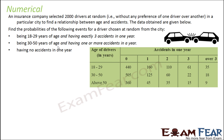An insurance company selected 2,000 drivers at random from a city and formed the relationship between age and accidents. Drivers aged 18 to 29 had 440 with 0 accidents, 160 with 1 accident, 110 with 2 accidents, 61 with 3 accidents, and 35 with more than 3 accidents. Similarly, data is given for ages 30 to 50 and 50 above. We pick a driver at random and find the probability that this driver is in the 18 to 29 age range with exactly 3 accidents.